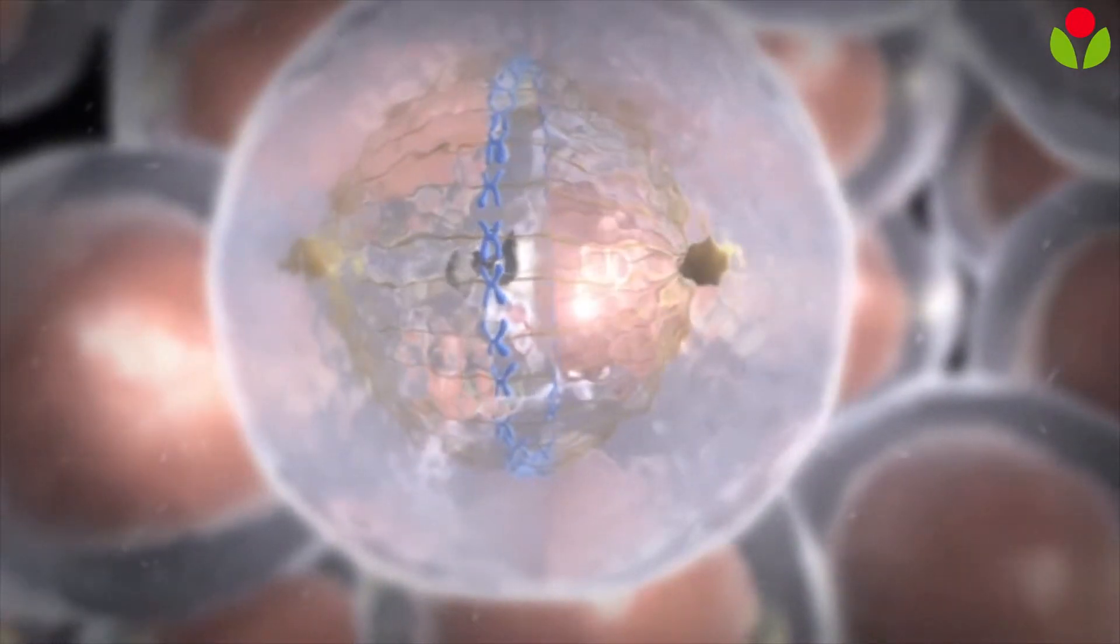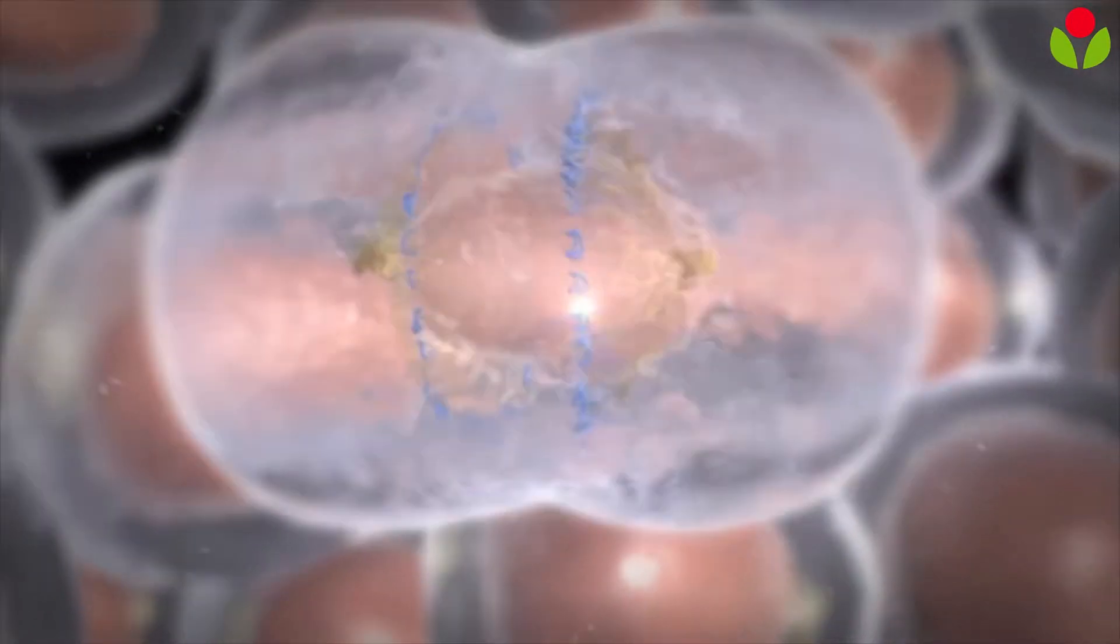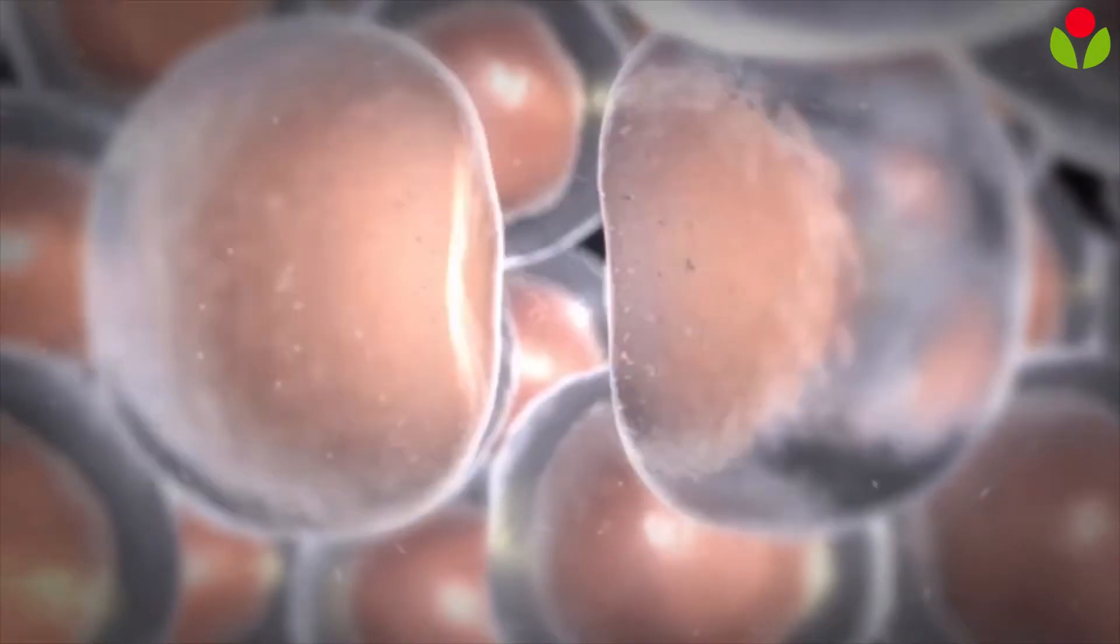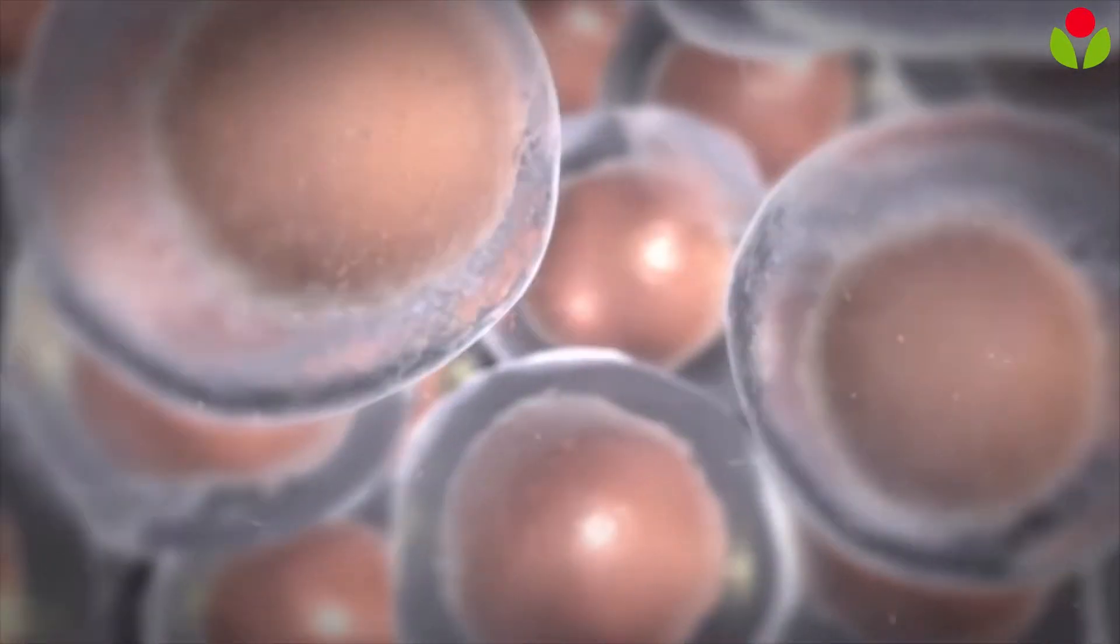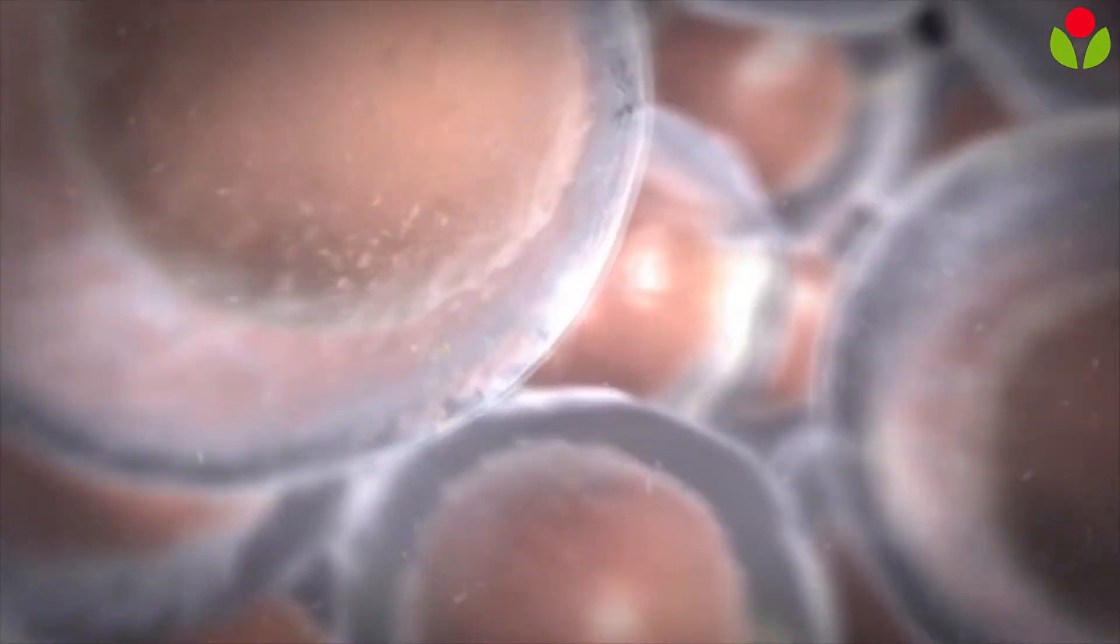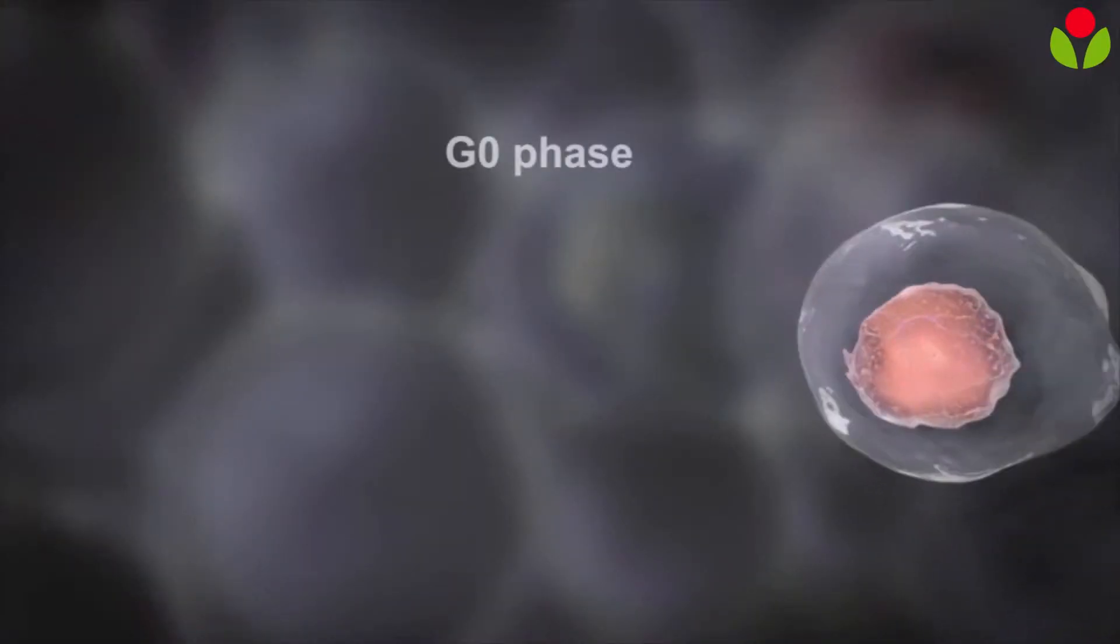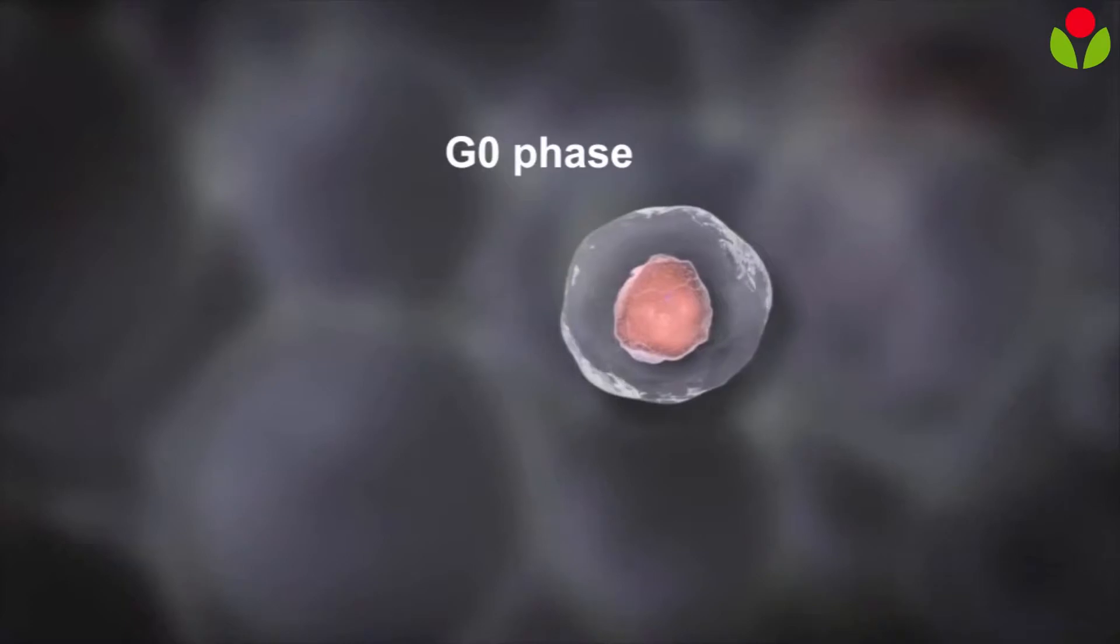The end result of the cell division is the formation of two identical daughter cells. Let's begin to explore how this process happens. The cell goes through many distinct steps as it divides. After a cell's initial formation, it goes into an inactive resting phase called G0.